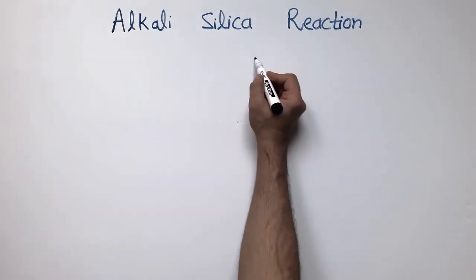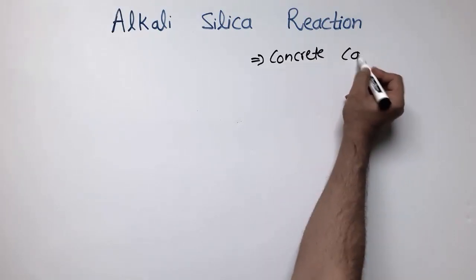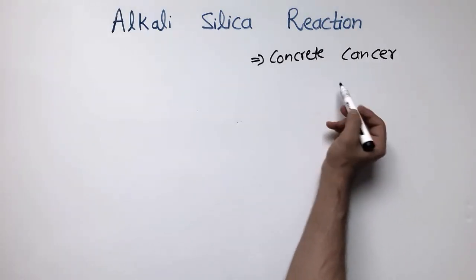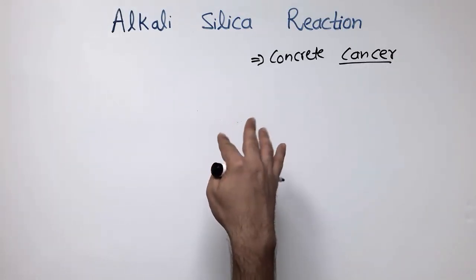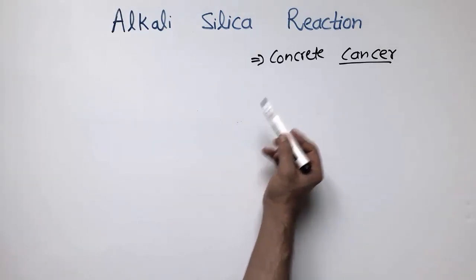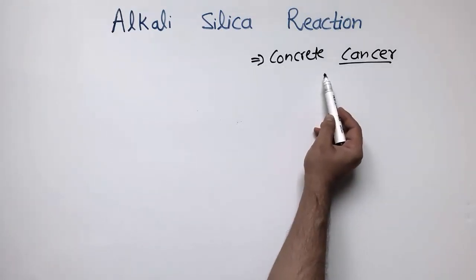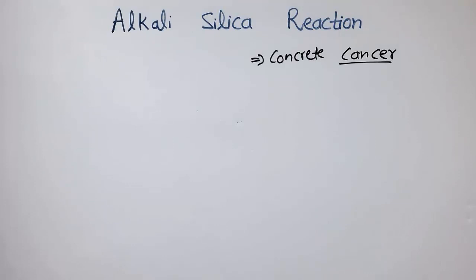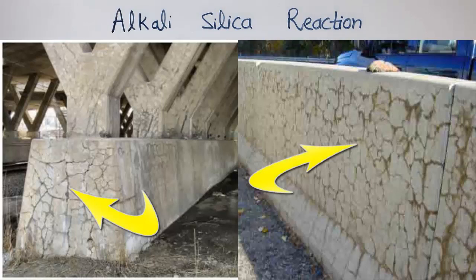This topic is also called 'concrete cancer' because it is like a disease of cancer — it occurs at one point and then distributes through the whole structure, decreasing the life of the entire concrete structure. As you can see in the picture here, cracks are distributed throughout a whole bridge due to the alkali silica reaction.